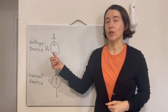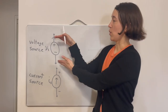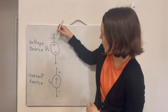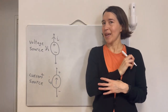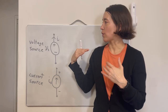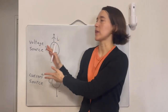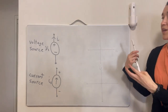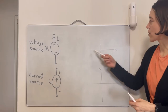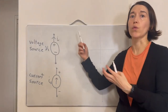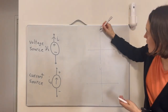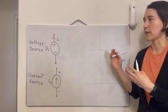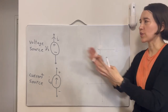For the voltage source, Vs defines the voltage that is across the terminals, and then current would be coming out. This is an IV curve — the x-axis is the voltage we see over the electrical component, and the y-axis is the current coming out of it. This helps us visualize how the component can operate.